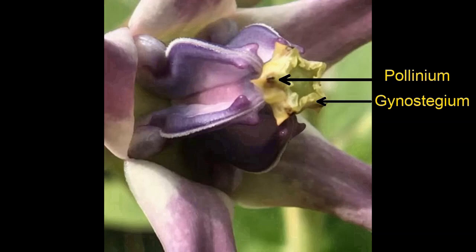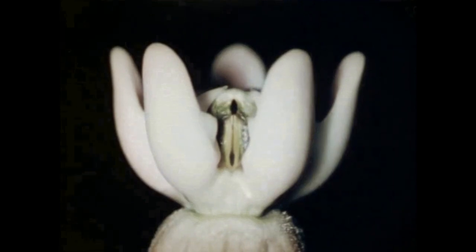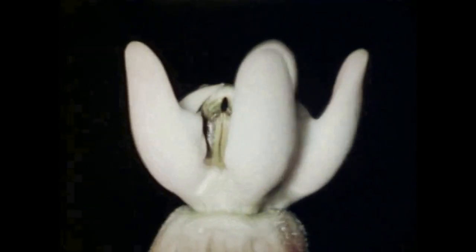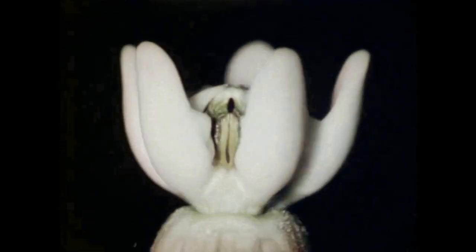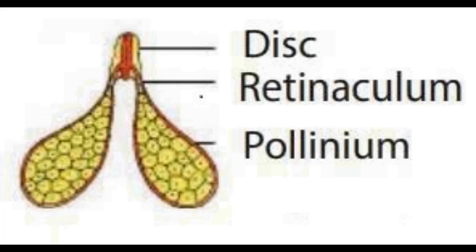Pollination in Calotropis is called the translator mechanism. The stigma is pentagonal and is fused with the androecium to form a gynostegium. The stamens of Calotropis produce pollinia. You may see the pentagonal stigma and the pollinia attached to the corners. Two pollinia are found attached to a glandular adhesive disc called the corpusculum by a thread-like structure called the retinaculum. The whole structure looks like an inverted letter Y and is called a translator.